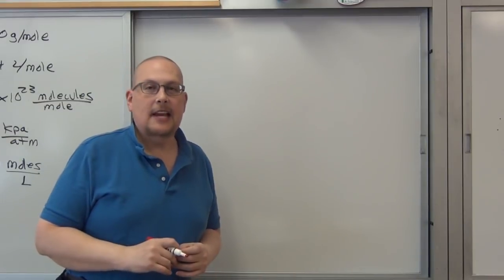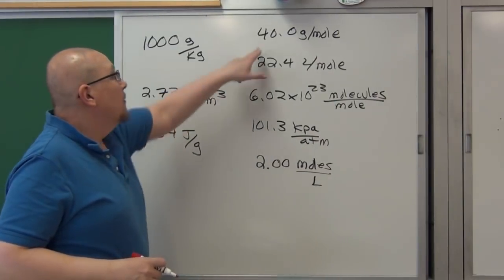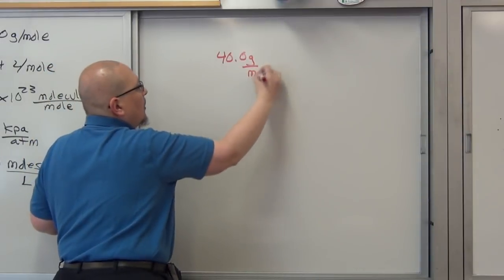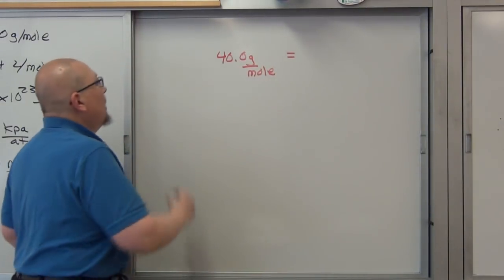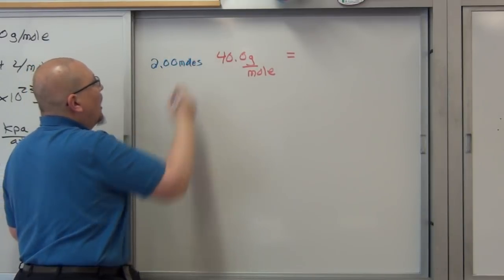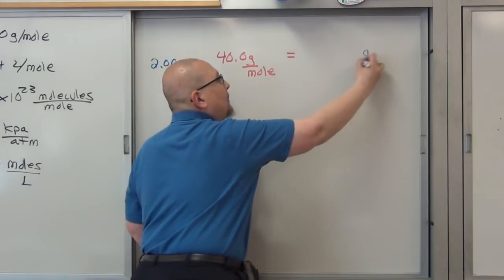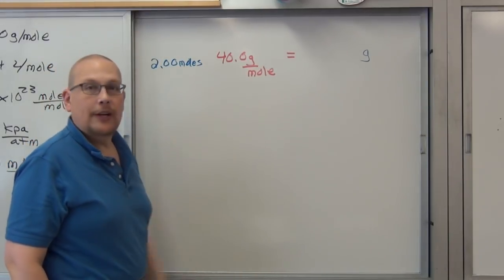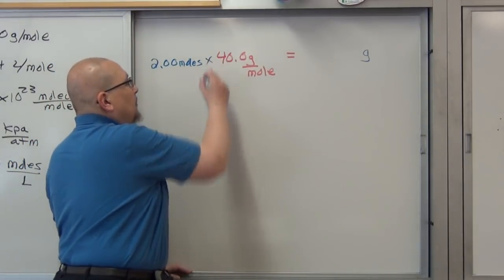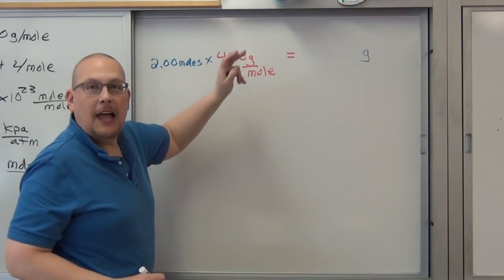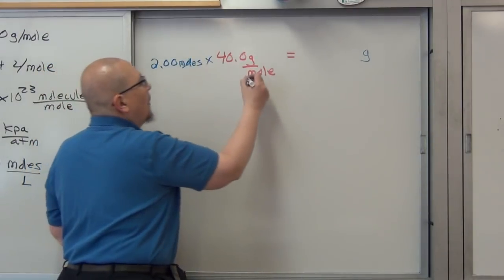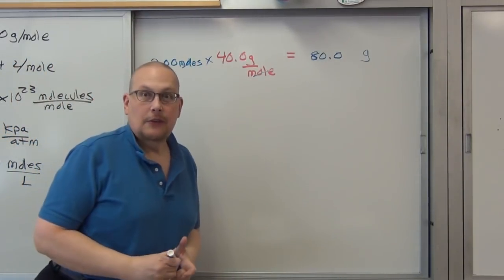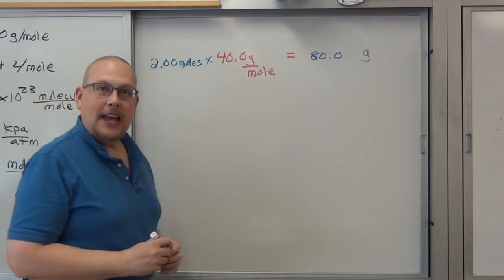Let's take as an example the conversion factor 40.0 grams per mole — the gram formula mass of sodium hydroxide. Suppose we have 2.00 moles of sodium hydroxide and we want to find out how many grams that is. We want to get rid of moles and be left with grams. We're trying to solve for the numerator, so we multiply. Moles will cancel and leave you with 80.0 grams — three sig figs in, three sig figs out.